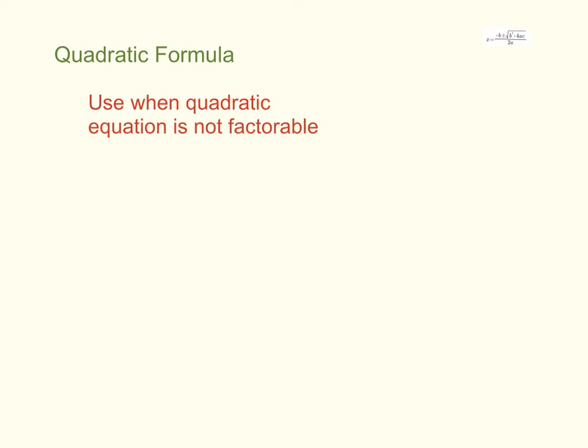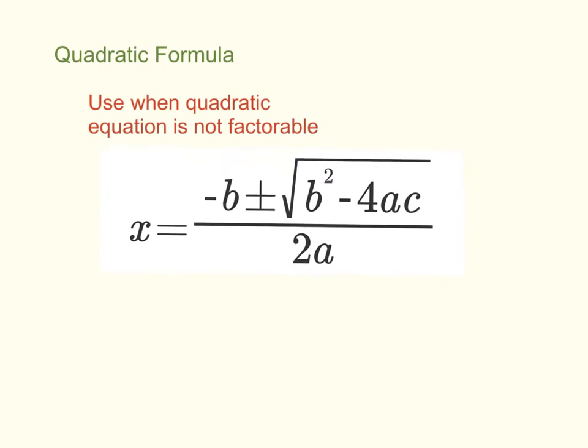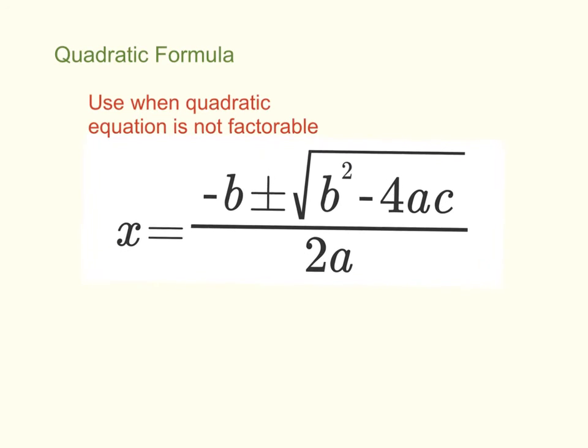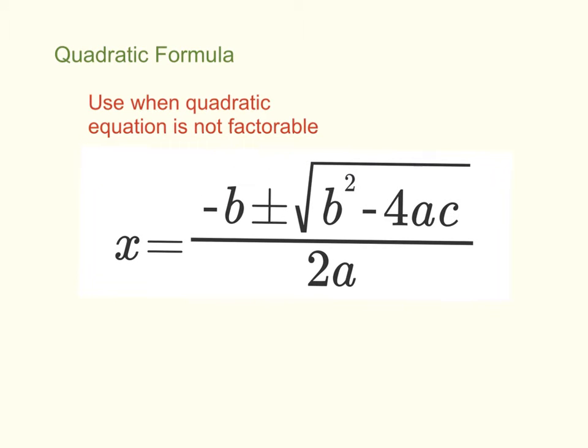So as previously mentioned, we're going to use the quadratic formula when the quadratic equation is not factorable. And the quadratic formula is equal to negative b plus or minus the square root of b squared minus 4ac all over 2a. And that is a complete jumbled mess if you look at it.